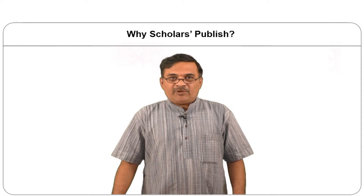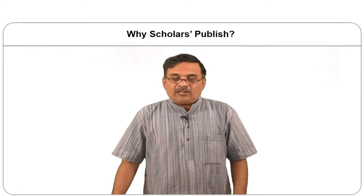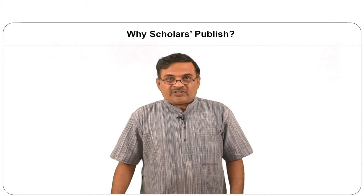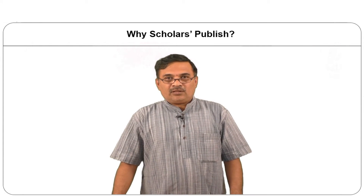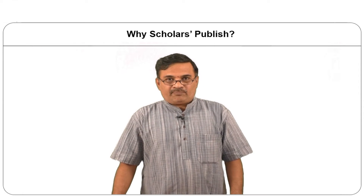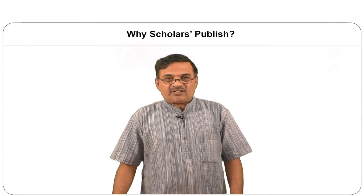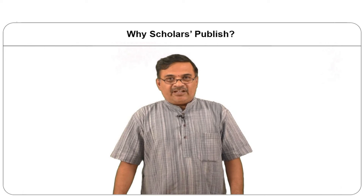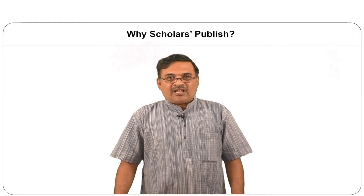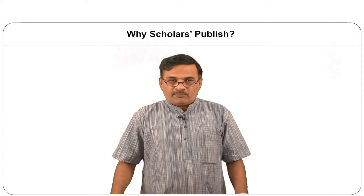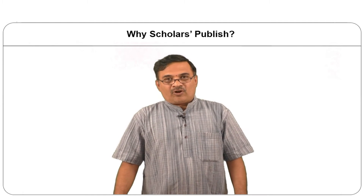One of the reasons why they publish is that they want their research work to be known to the outside world. On the other hand, in the scientific community there is a phenomenon called 'publish or perish.' If the academic and research community wants to survive and prove themselves in the field, either they have to publish or they will lose their recognition. These publications form the data source for bibliometric studies.